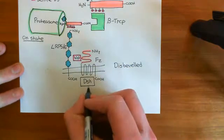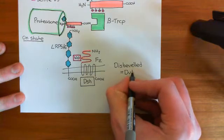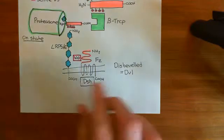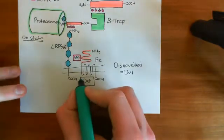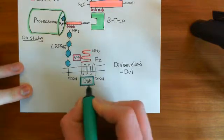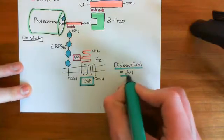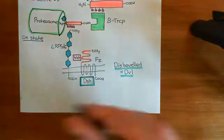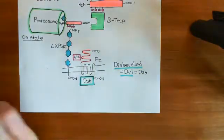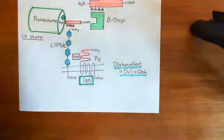DSH is short for dishevelled. Some people use the abbreviation DVL, so be aware that you might see that used quite often. But I think dishevelled more naturally abbreviates to DSH, and other people use DSH as well. So dishevelled can be abbreviated to DVL or DSH — we will use DSH in this video.